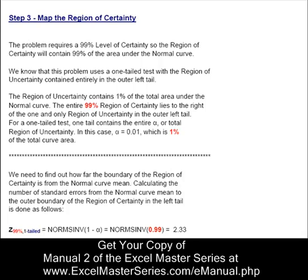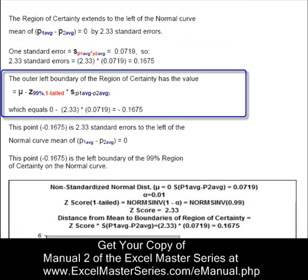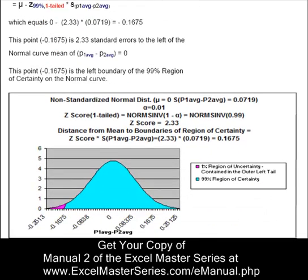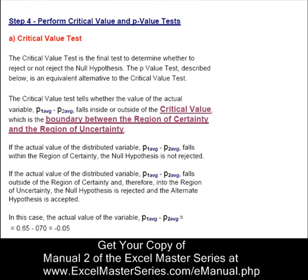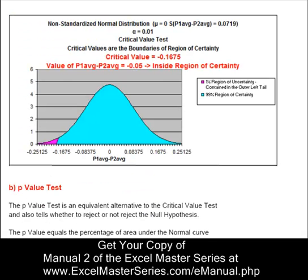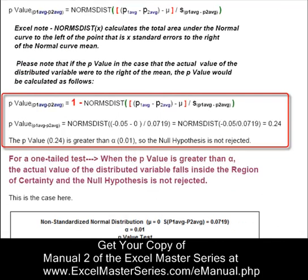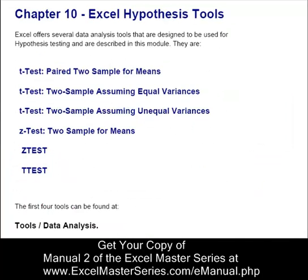If you want to learn MBA-level statistics and be a functional problem solver, this is the manual that will give you those skills, step by step. Here's step four of that problem — the critical value test. We'll look at the p-value test as well, exactly how to do that in Excel. You'll be able to do this, using all the different formulas.